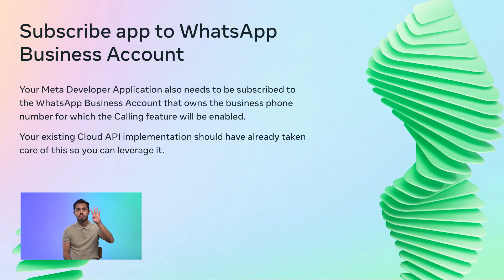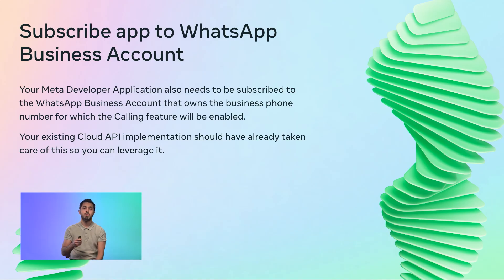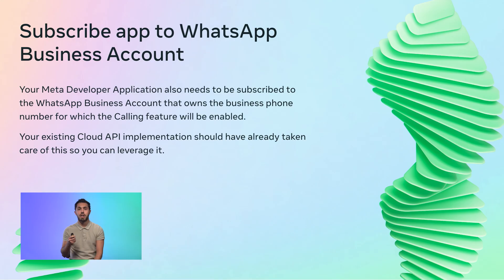Fourth, your Meta developer account also needs to be subscribed to the WhatsApp Business Account that owns the business phone number for which the calling feature will be enabled. This is also done during the Cloud API onboarding process, so you can leverage it.